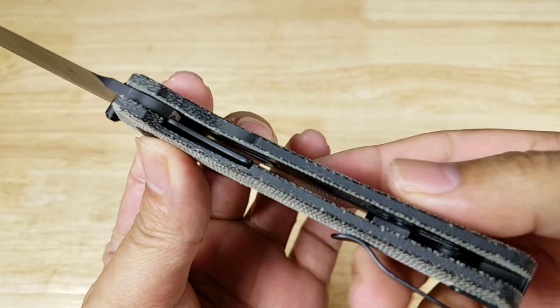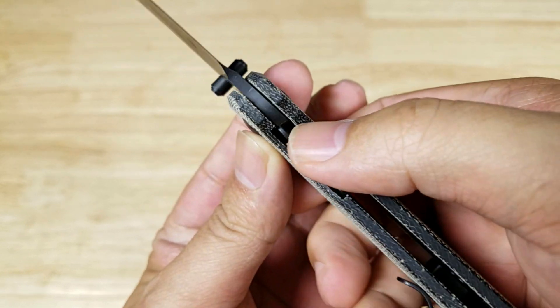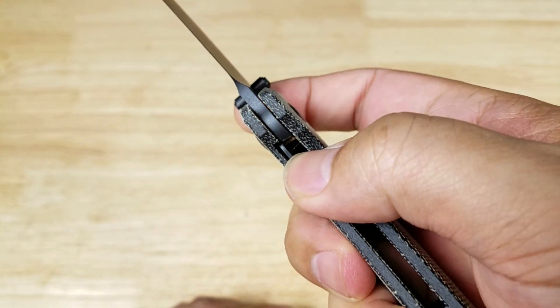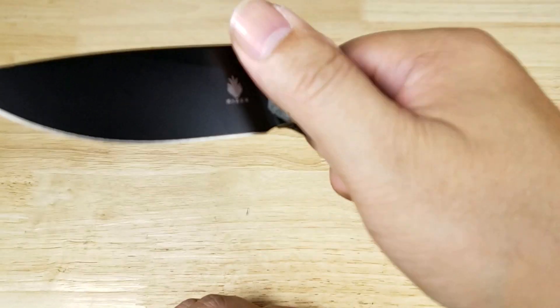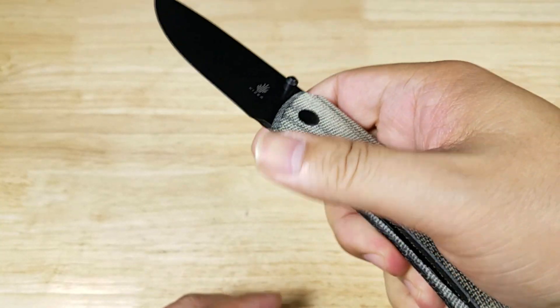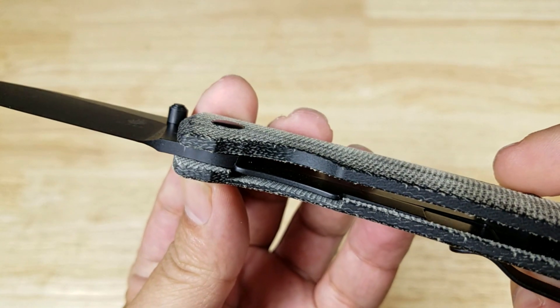Let's flip it over and have a closer look at the liner lock here. Again, to close this, all you're gonna do is move this lever on the side. Bump it with your pointer finger. Very easy to operate with one hand.